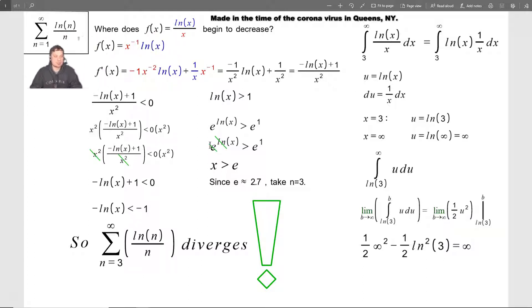So what I'm going to do is I need to first change the lower limit right here where it says n equals 1. The reason is the following. If I let f of x be ln of x over x, where does that begin to decrease? Take a look.